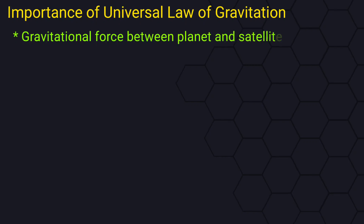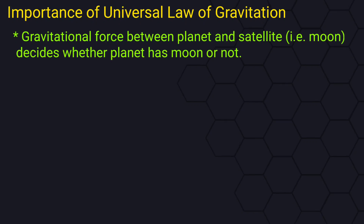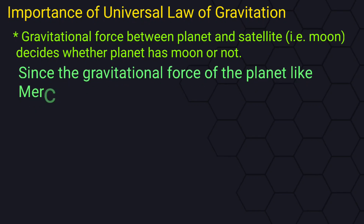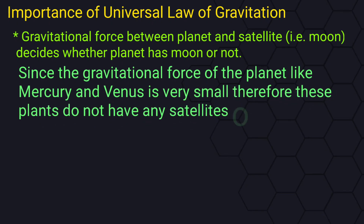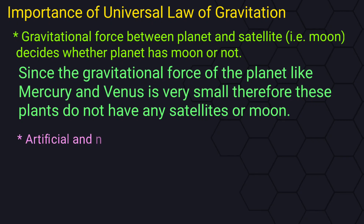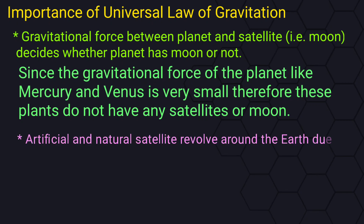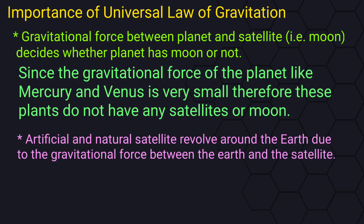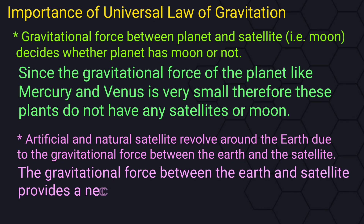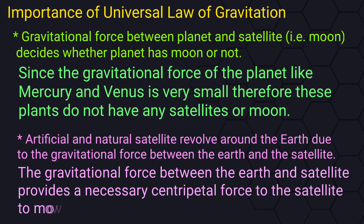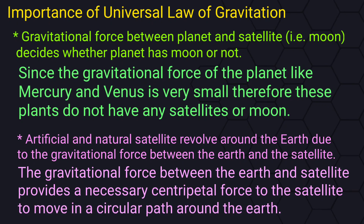The gravitational force between a planet and a satellite determines whether the planet has a moon or not. Since the gravitational force of planets like Mercury and Venus is very small, these planets do not have any satellite or moon. Artificial and natural satellites revolve around the Earth due to the gravitational force between the Earth and the satellite, which provides the necessary centripetal force for circular motion.